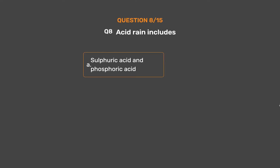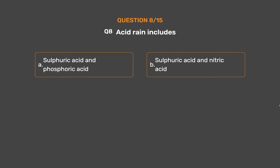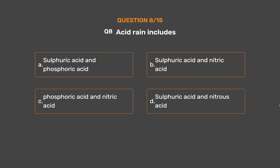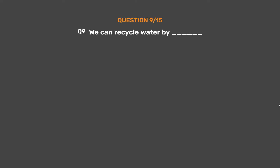Question number eight: Acid rain includes — option A: sulfuric acid and phosphoric acid, option B: sulfuric acid and nitric acid, option C: phosphoric acid and nitric acid, option D: sulfuric acid and nitrous acid. The correct answer is option B: sulfuric acid and nitric acid.